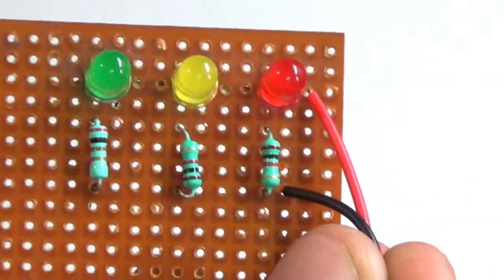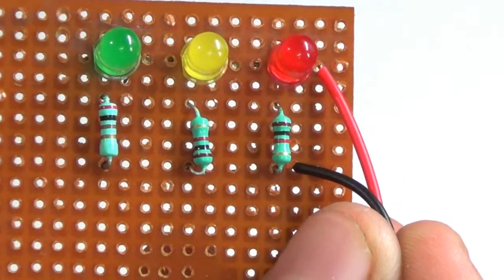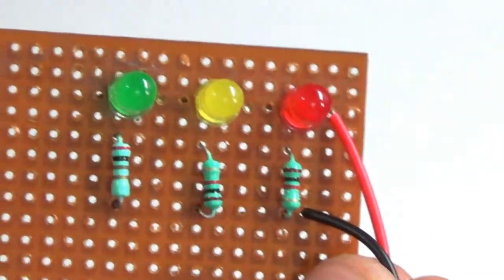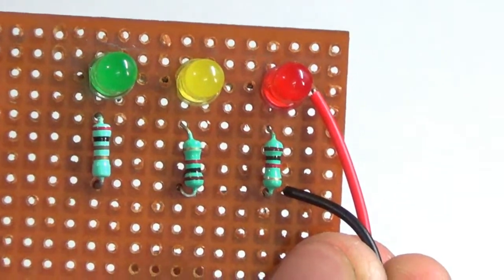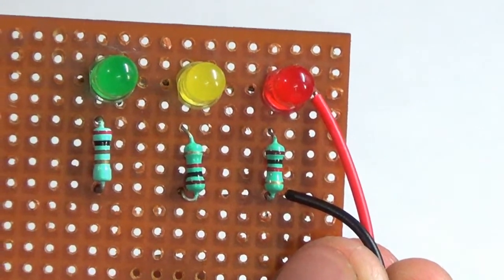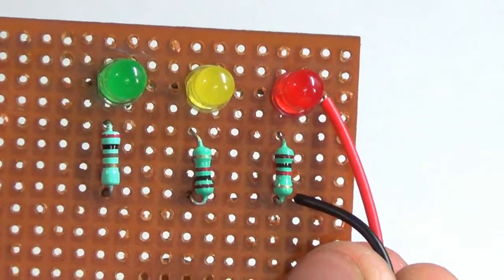After soldering the resistors, now connect the positive wire of the battery snapper to the red LED's anode and the negative wire of the battery snapper to the resistor's pin.